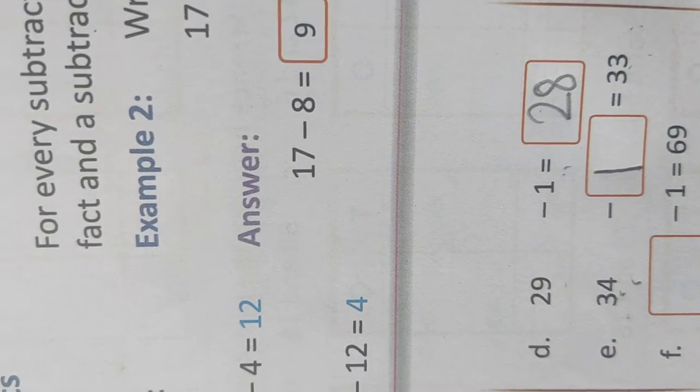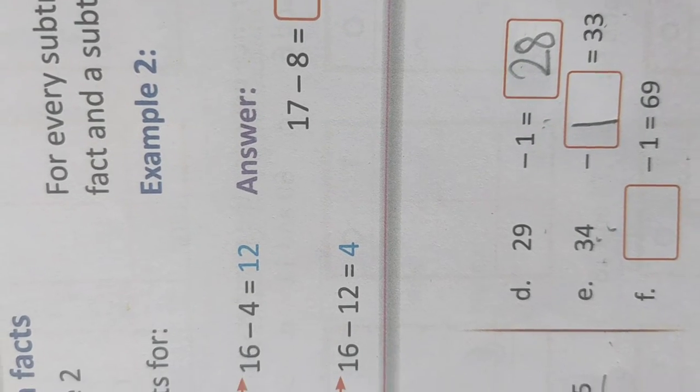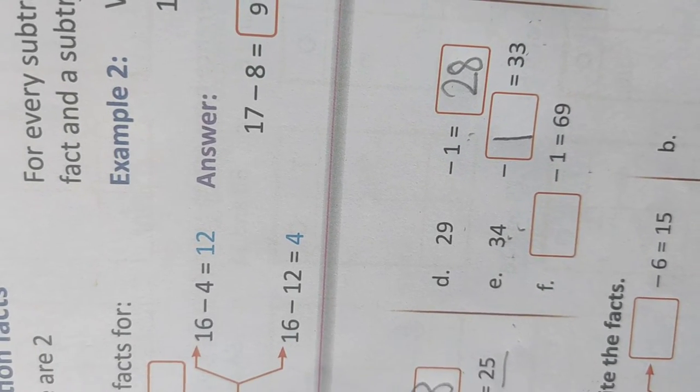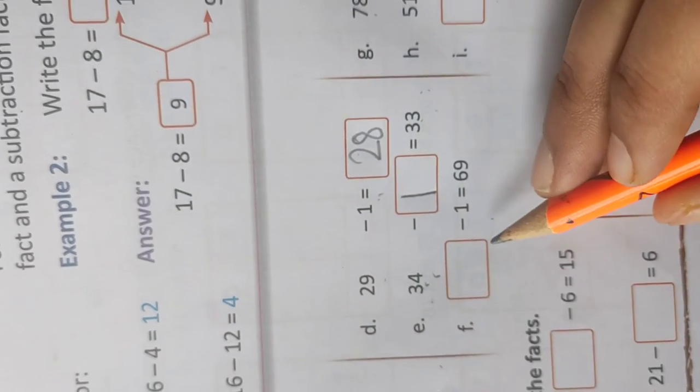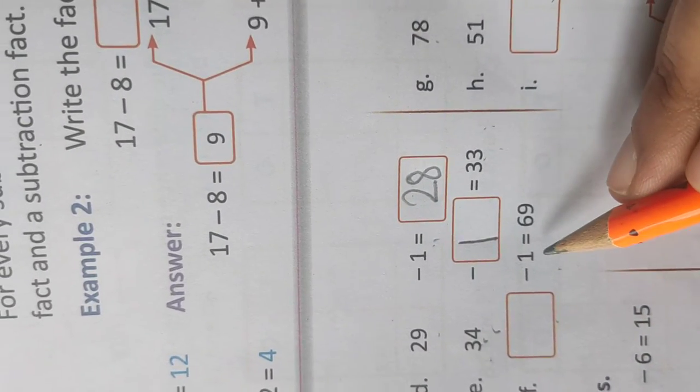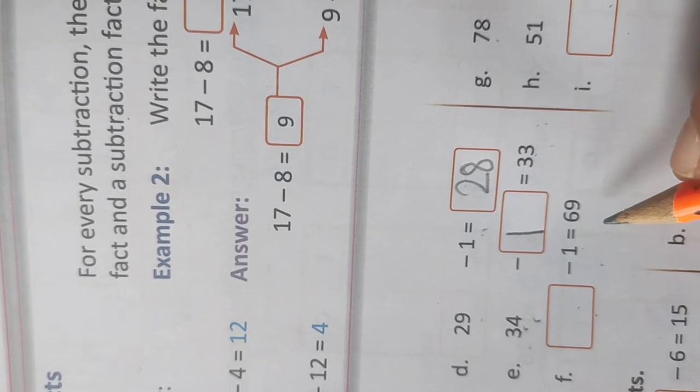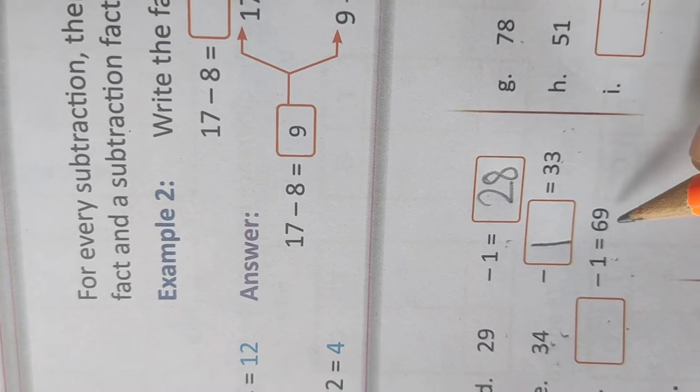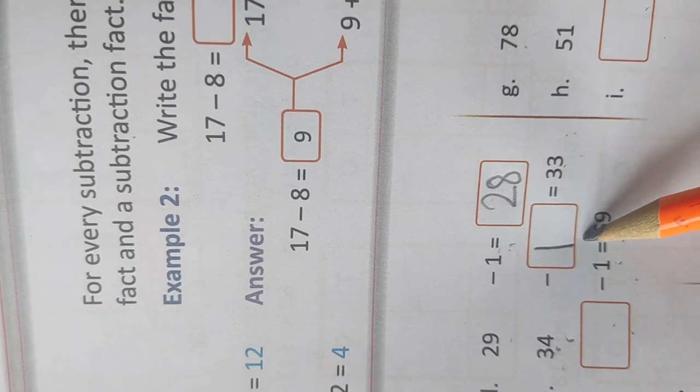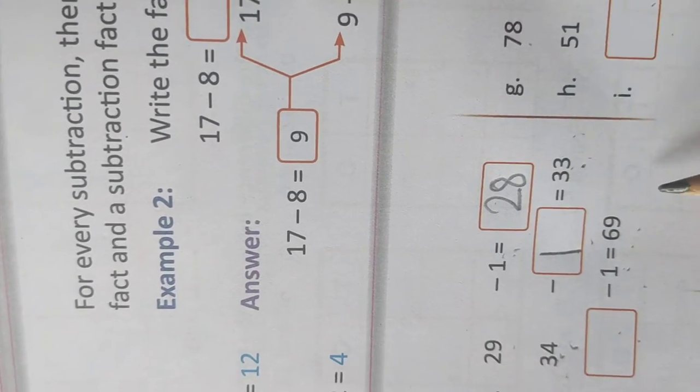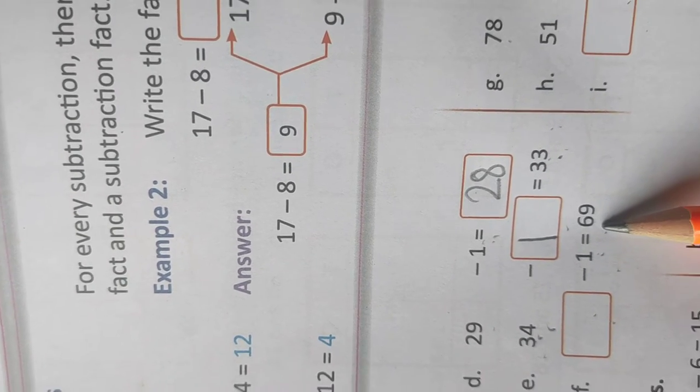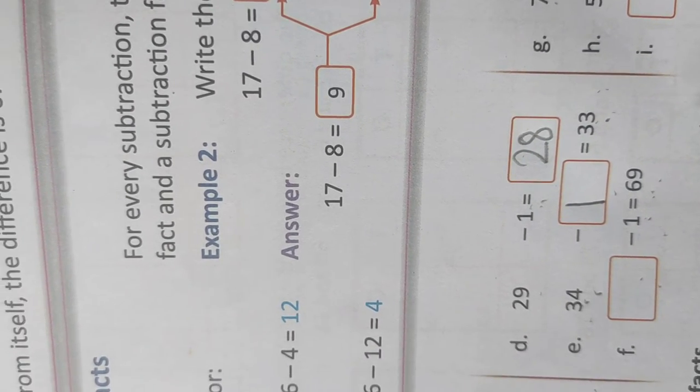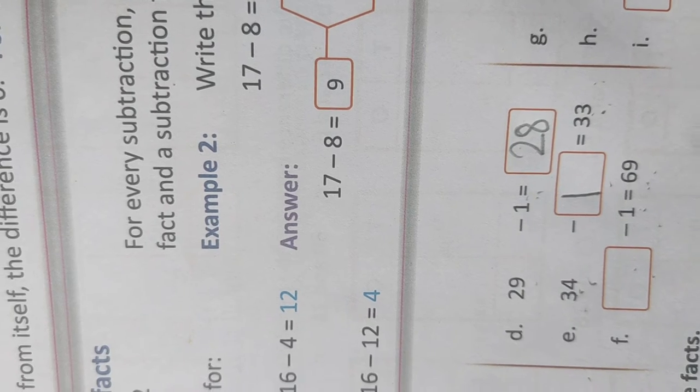We are getting the predecessor of the given number. Predecessor means which number comes before the given number. So 34, out of 34, what should be subtracted? 1. And my answer is 33. Now, what number should be here that we are subtracting 1 from it and we are getting 69? As I said, if we subtract 1 from the given number, we get predecessor. This time, we need to write the successor of 69. That means the number which comes after 69.